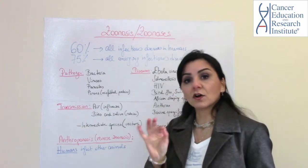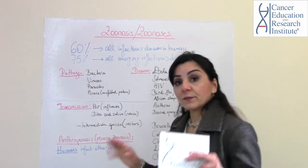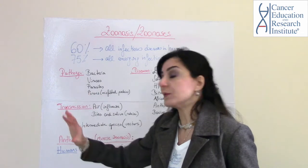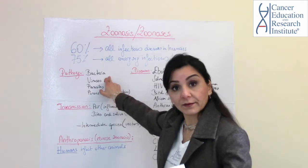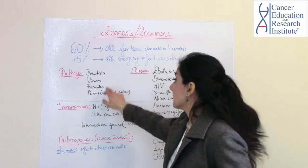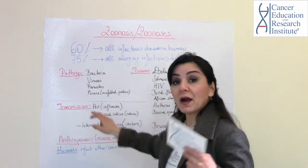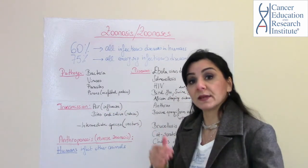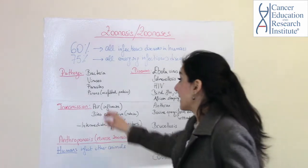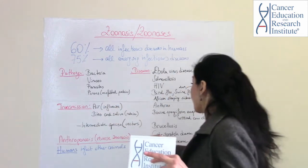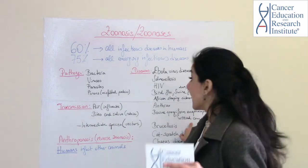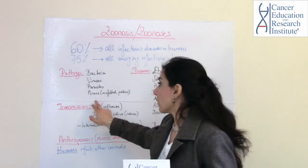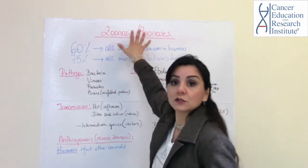Now let's talk about what the pathogens are. The pathogens that can be transferred from an animal to a human are bacteria, viruses, parasites, and prions — which are misfolded proteins and can act very dangerously in a human body. An example of this is mad cow disease. The prions are also pathogens that cause zoonosis.